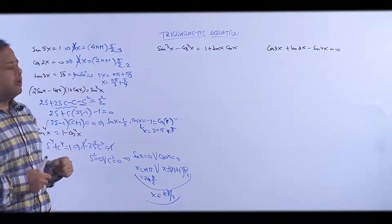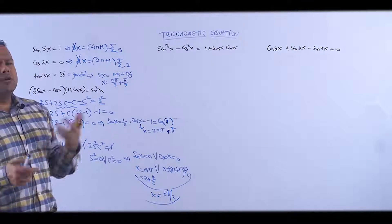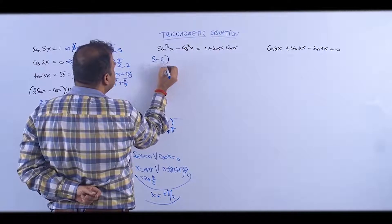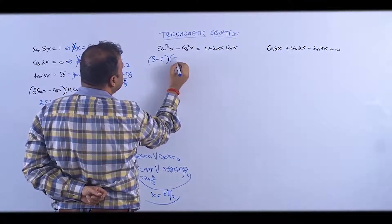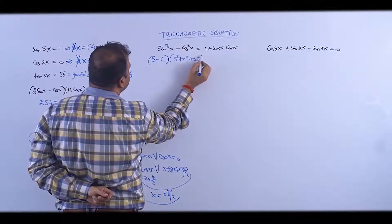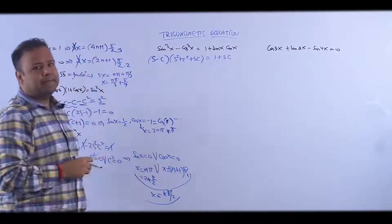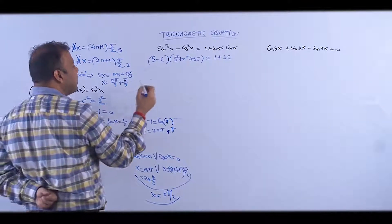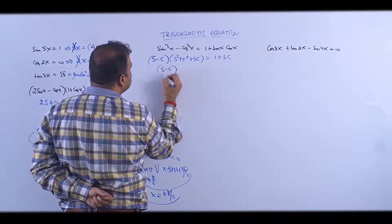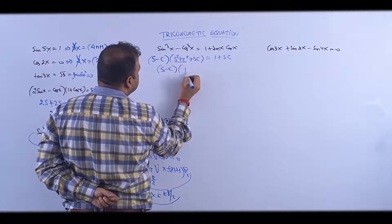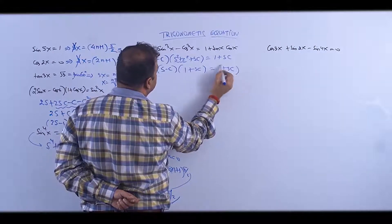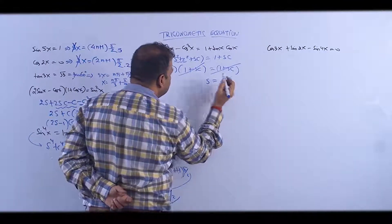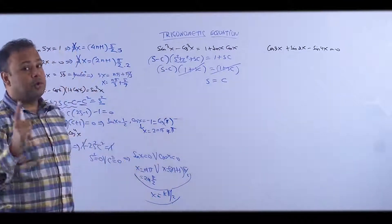Next: there's a cube — a³ - b³ formula. a³ - b³ = (a - b)(a² + b² + ab). Pause and solve it — it's an easy and enjoyable question. This gives (sin - cos)(sin²x + cos²x) = (sin - cos)(1).